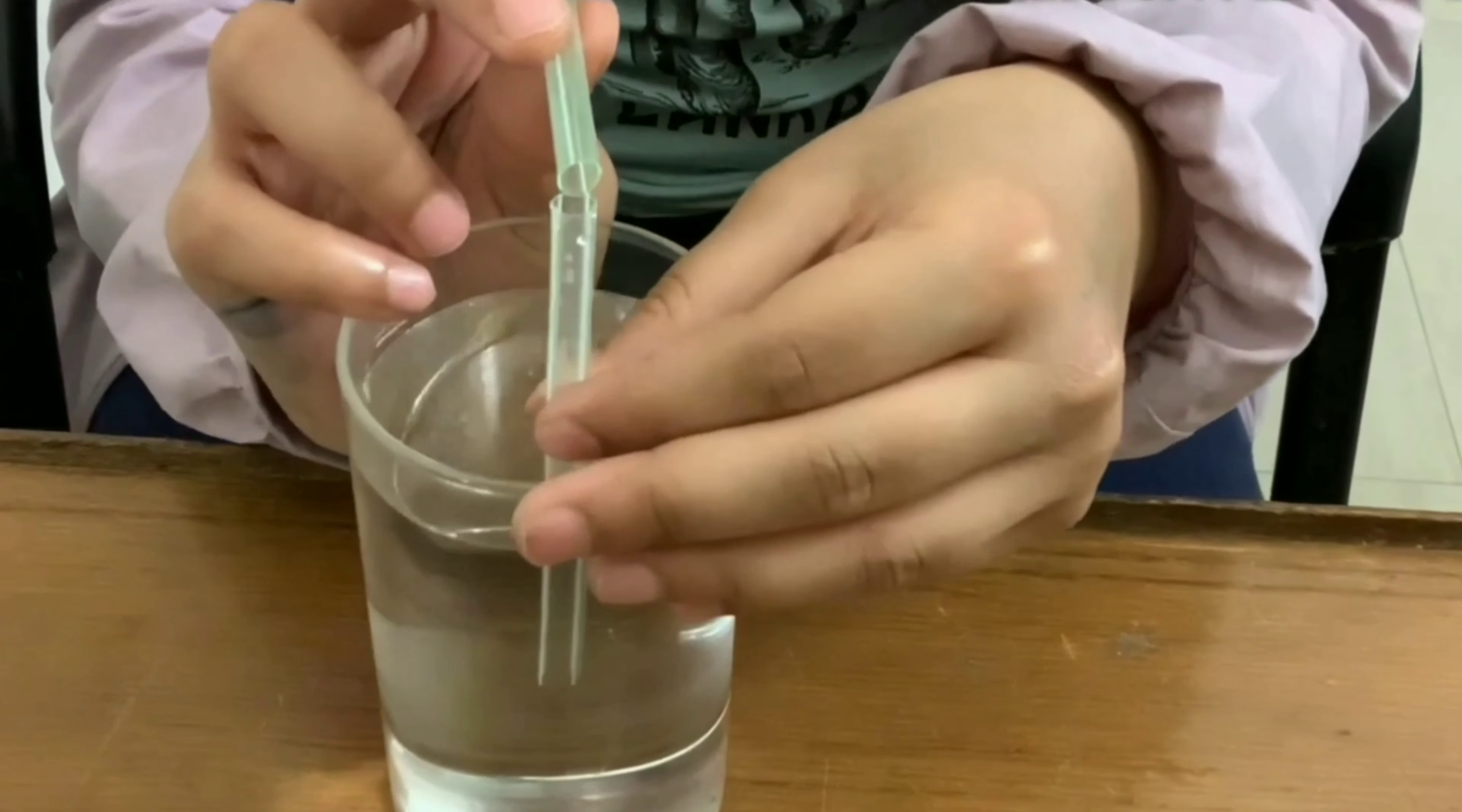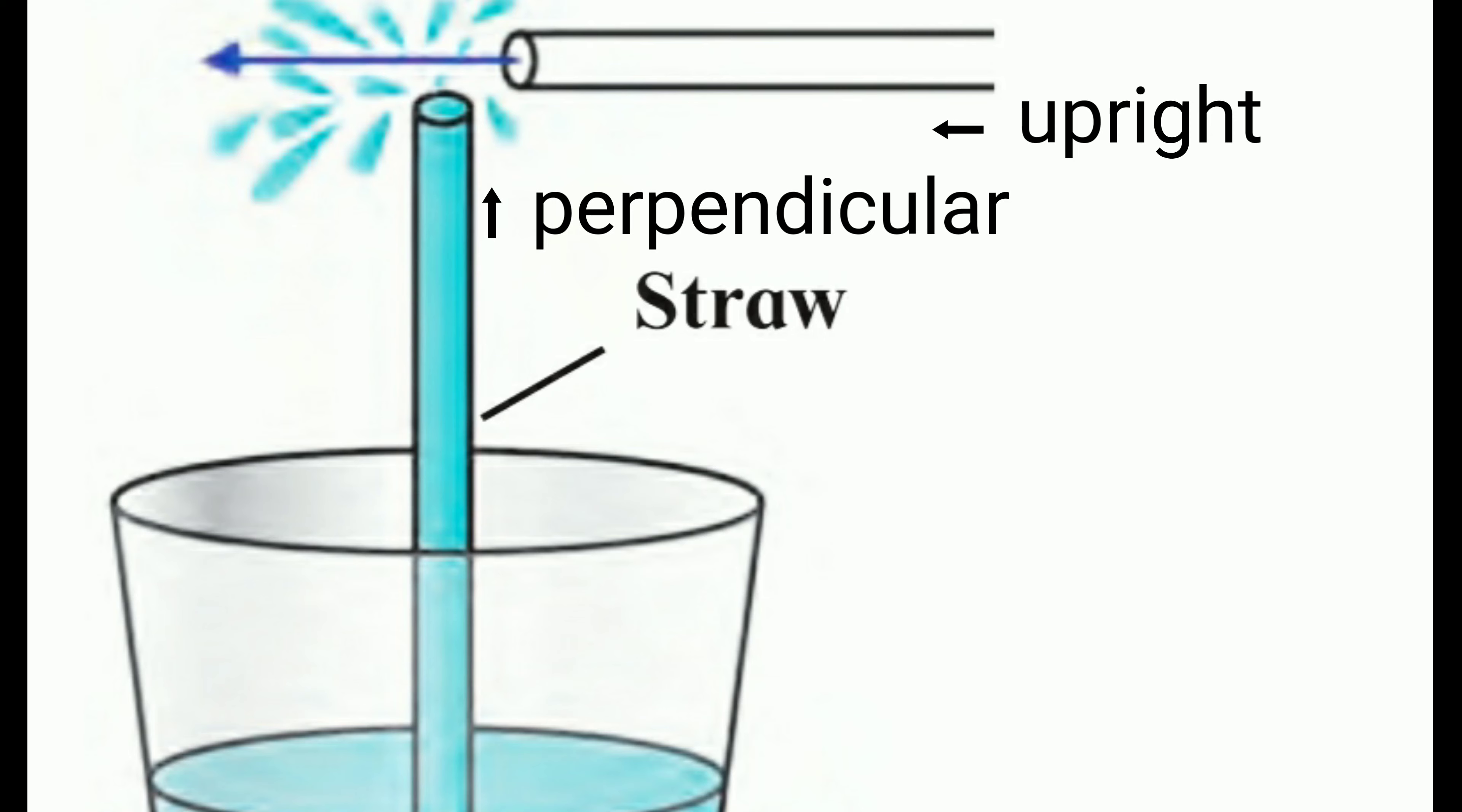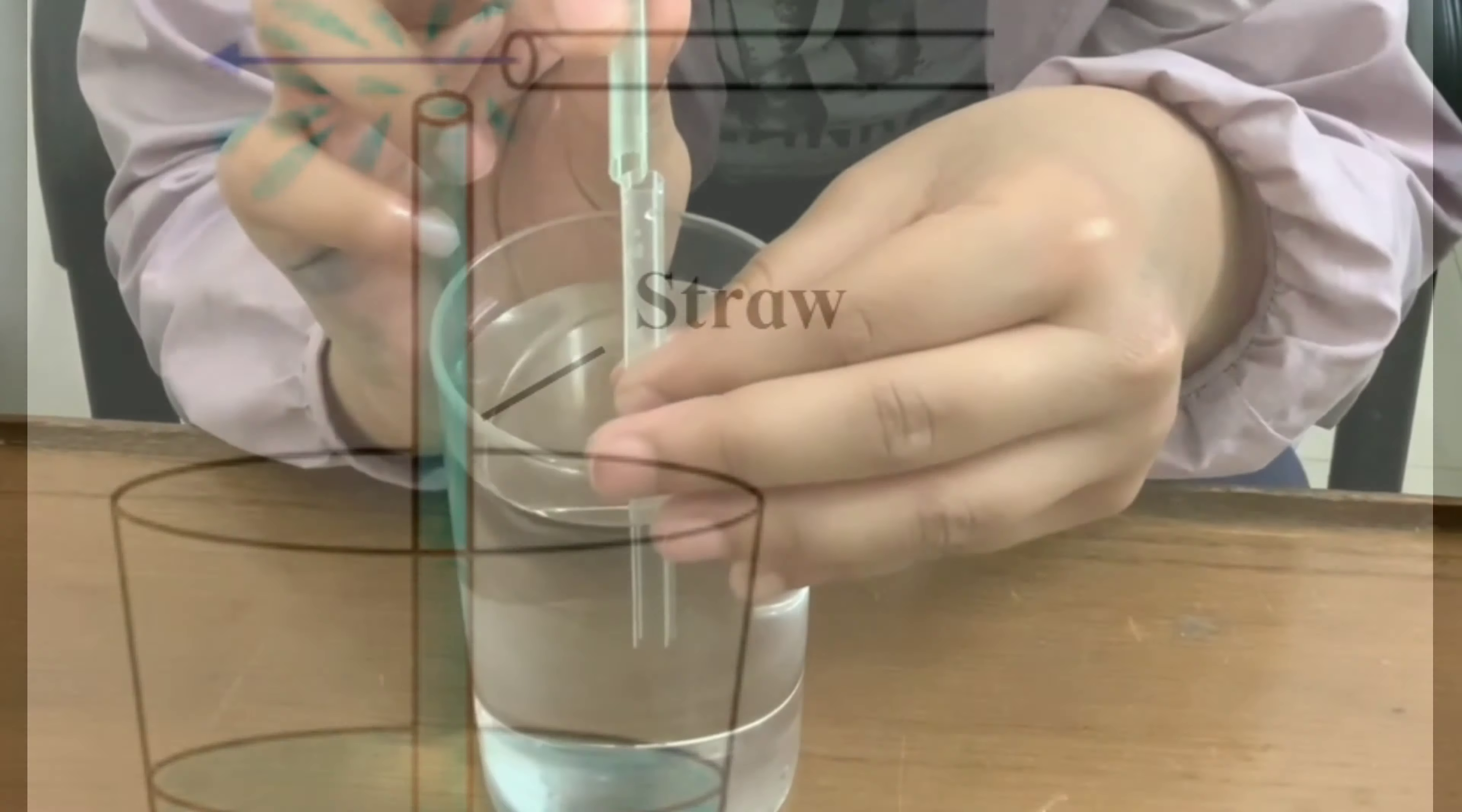Hold a small piece of another straw near the upper end of the first straw and perpendicular to that straw. See, one straw is upright in the glass or cup and one is perpendicular. It means a 90-degree angle we have to make.